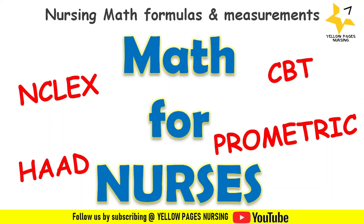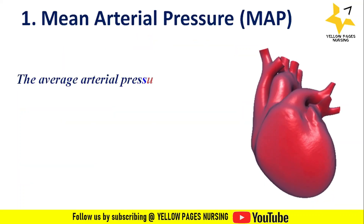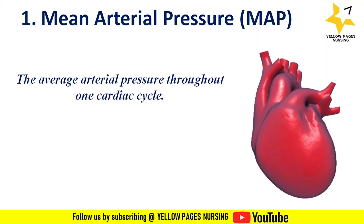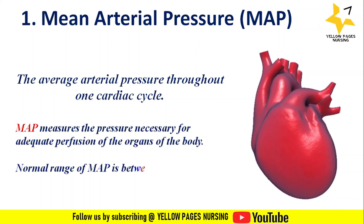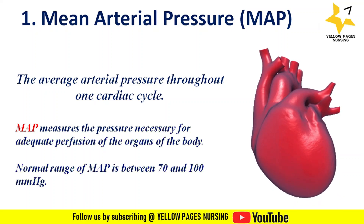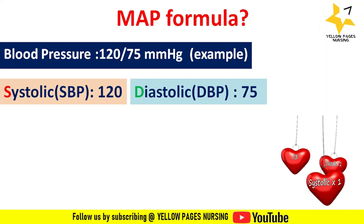Before entering the session, if you have not subscribed our channel please subscribe and do not forget to hit the bell icon to receive instant notifications. Let's start with mean arterial pressure. Mean arterial pressure is the average arterial pressure throughout one cardiac cycle. MAP measures the pressure necessary for adequate perfusion of the organs. The normal range of MAP is between 70 and 100 mmHg.